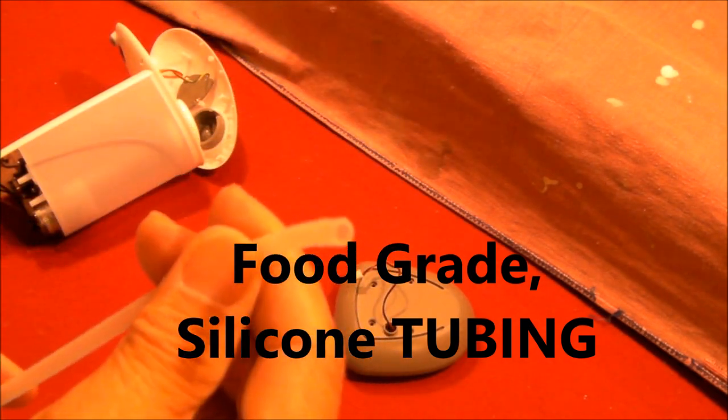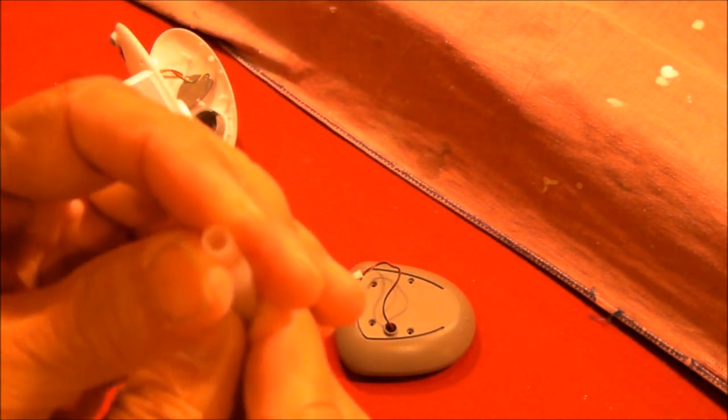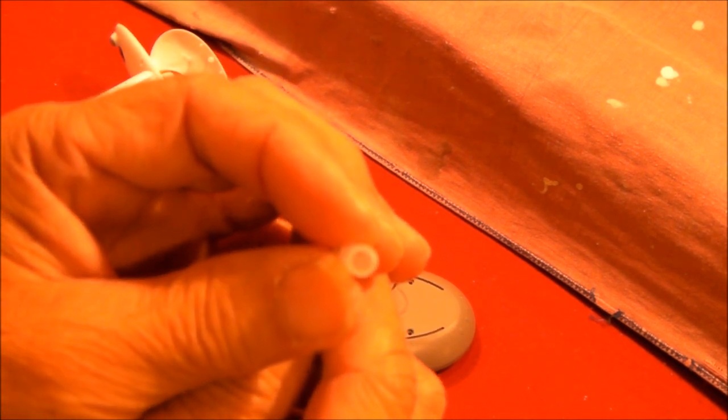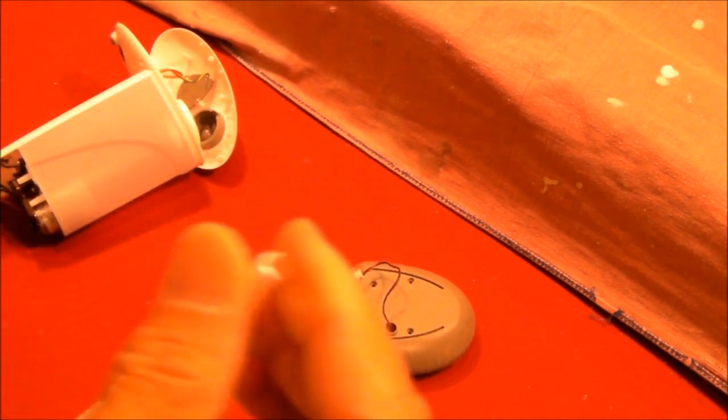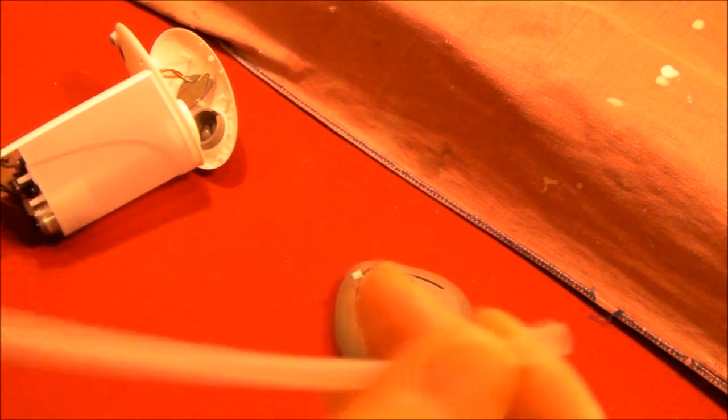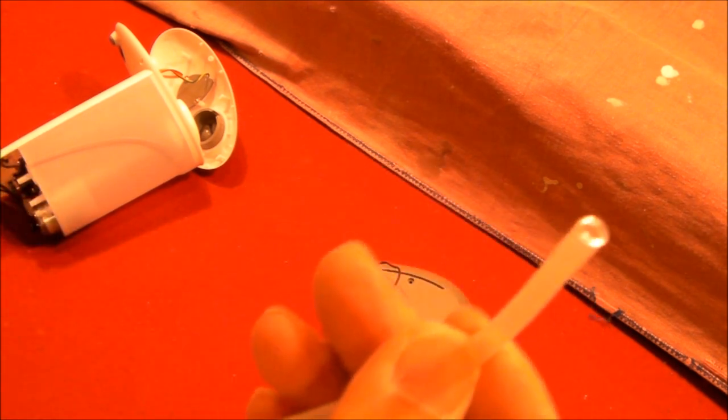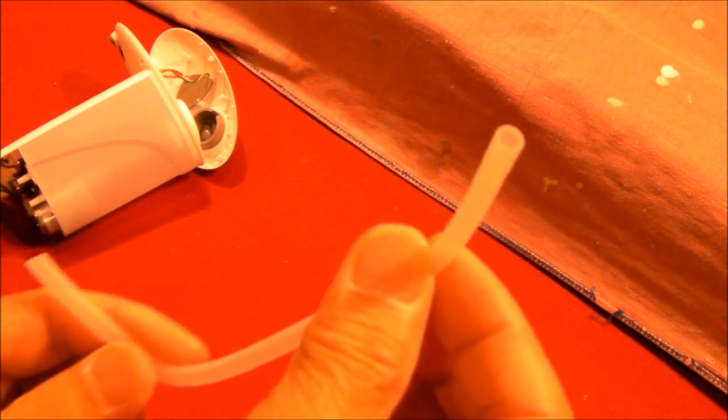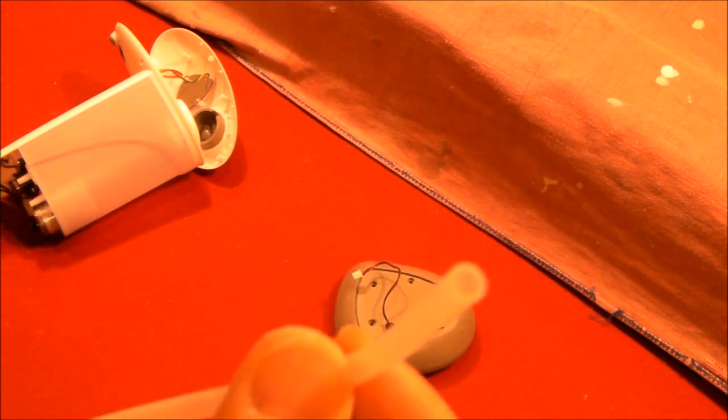This hose happens to be four millimeter inside diameter, six millimeter outside diameter. So six millimeter OD, four millimeter ID, 91 cents. I'll probably have to wait 20 days or so to get it. But once I get this hose in, this is going to work just fine.